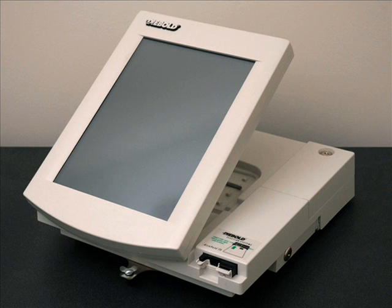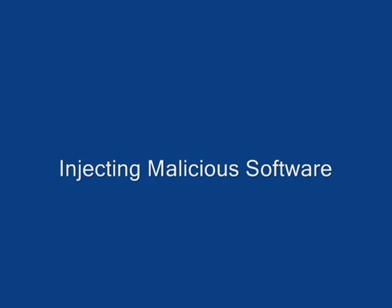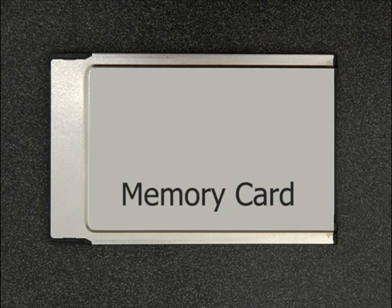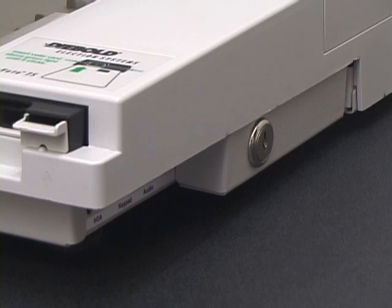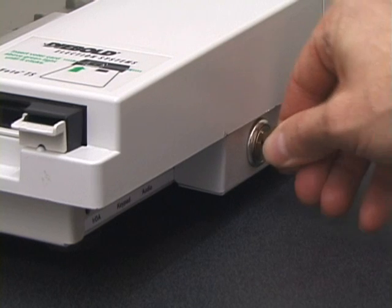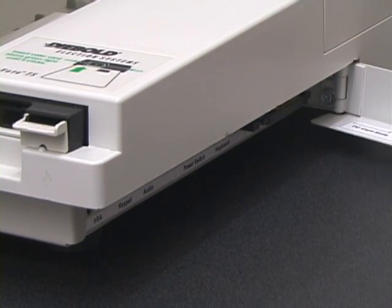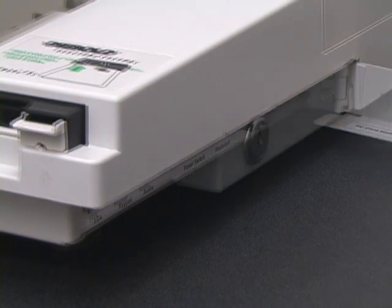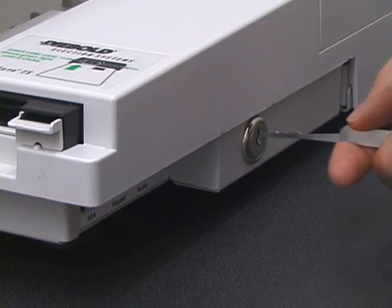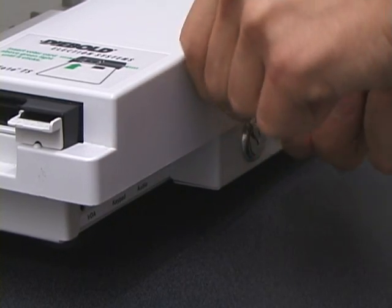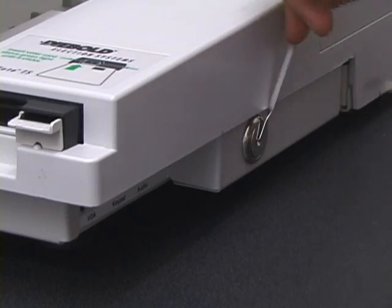This vote-stealing attack requires injecting malicious software into the voting machine. Anyone who has access to a voting machine for a few minutes can install malicious code. Here is one way to do so. In advance, we prepare a memory card containing our malicious software. When we get a few minutes alone with the machine, we first open the side door. We can do this with a key. There are thousands of keys in circulation, and any hardware store will copy them. Even without a key, the lock is easily picked. One member of our team can consistently pick the lock in less than 10 seconds.